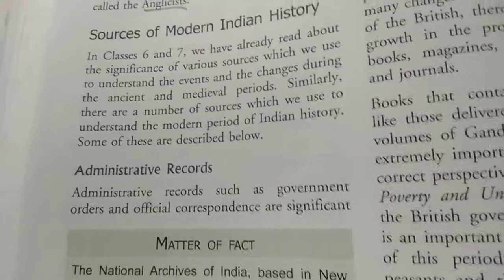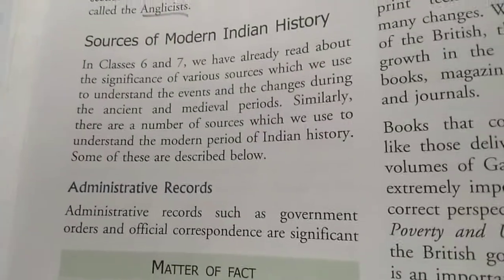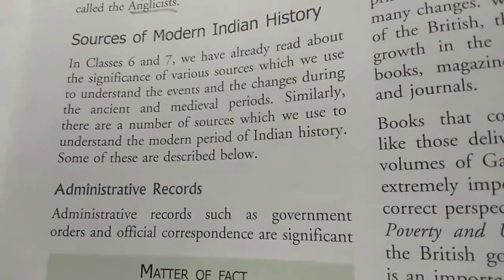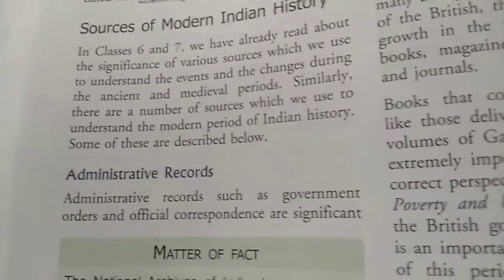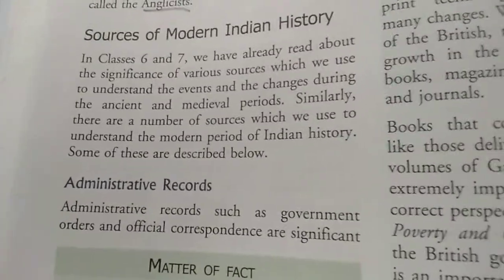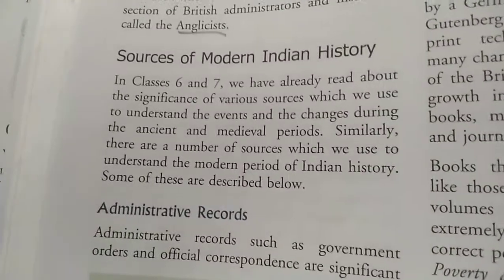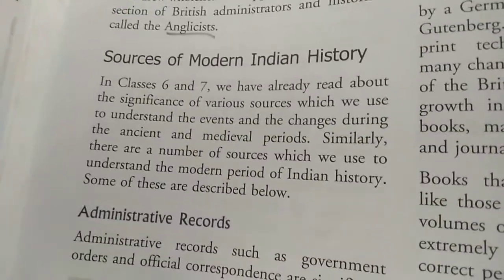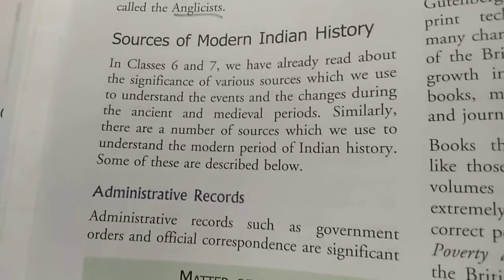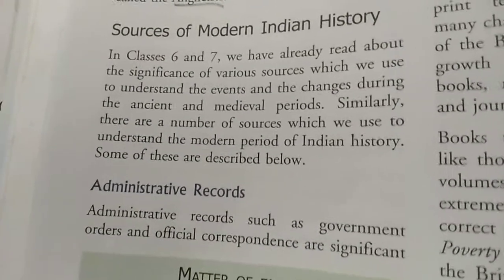The information we have from our past requires some evidence — some records, some statues, some monuments — through which we come to know what different types of activities had taken place in our past. Let us find out one by one regarding the sources of modern Indian history.